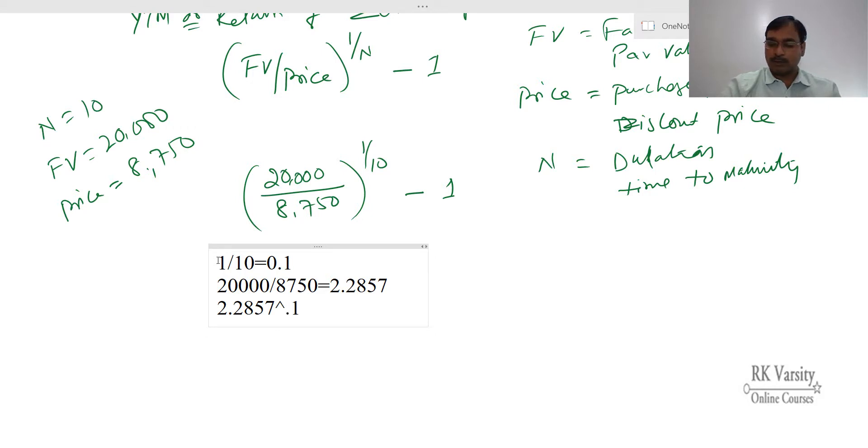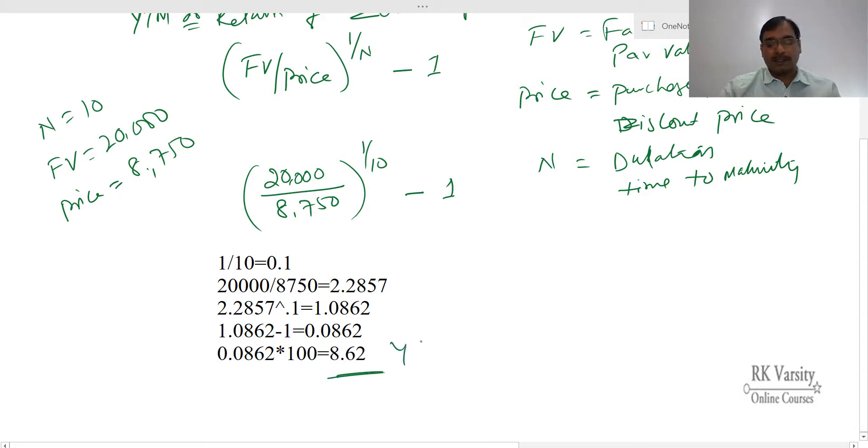So finally, 1.0862 minus 1. This gives 0.0862. When you convert it into a percentage, that is 0.0862 times 100, so 8.62% is the yield to maturity on this bond.